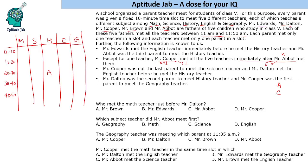The next condition says Mr. Cooper was not the last parent to meet the Science teacher, and Mr. Dalton met the English teacher before he met the History teacher. We also have the condition that Mr. Dalton was the second parent to meet the History teacher, and Mr. Cooper was the first parent to meet the Geography teacher. Since Cooper is first for Geography, Abbott must be last for Geography.